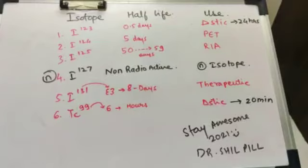For technetium-99, the test is read after 20 minutes of administration, while the radioimmunoassay is read after 24 hours.